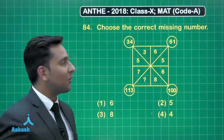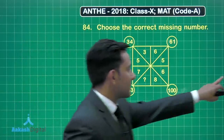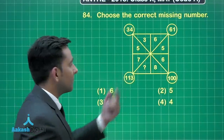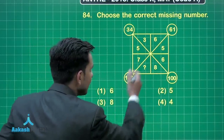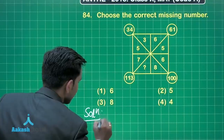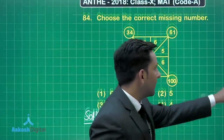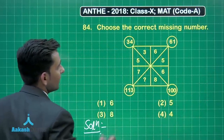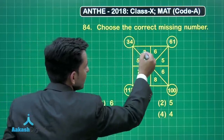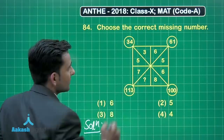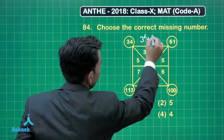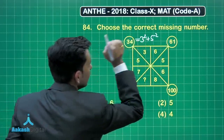Now friends, let's solve question number 84. Here in this question, we have to find the correct missing number — the number which will replace the question mark. So first we'll find the pattern in the given figure. You can see that the number in the circle is 34, which is the sum of the squares of two numbers. So 3 squared plus 5 squared gives us 34.